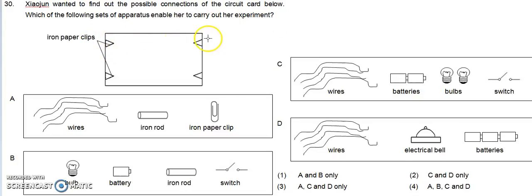So we have a circuit card here and we have iron paper clips. Firstly, we need wires to actually join the iron paper clips to see whether there is a connection or not.